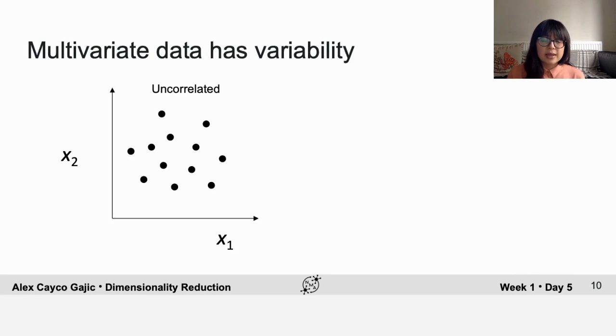And one possibility is you may see data that looks like this. So this is an example of uncorrelated data where the variability of neuron 1 is pretty much the same as the variability of neuron 2.